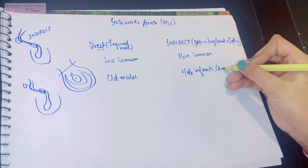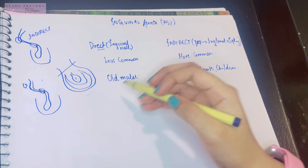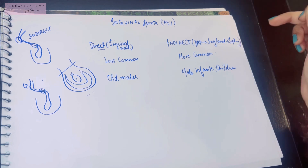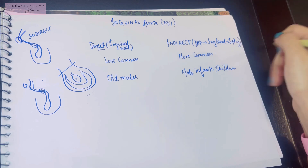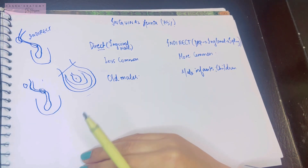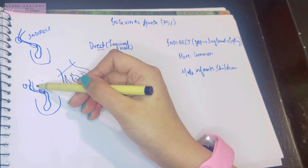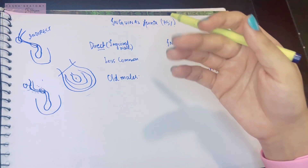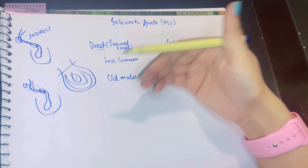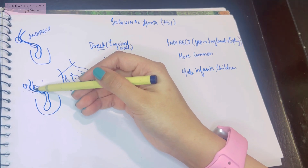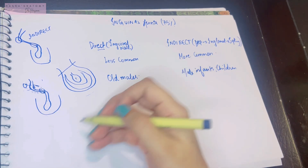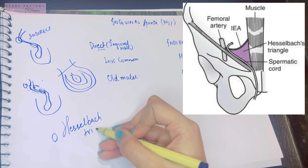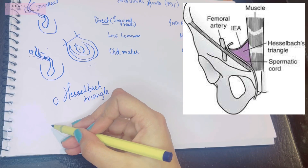The indirect inguinal hernia enters through the deep inguinal ring, travels through the inguinal canal, and exits through the superficial inguinal ring into the scrotum. In direct inguinal hernia, there is weakness in the posterior wall of the inguinal canal — often due to recurrent trauma from chronic coughing in older men — and the hernia enters through the Hesselbach triangle.